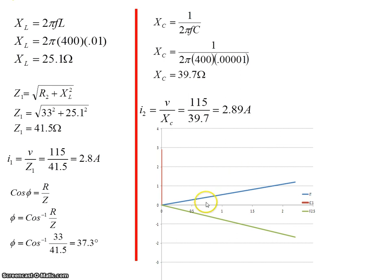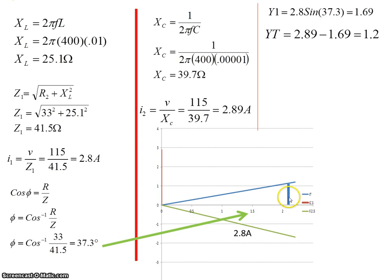So if I draw the phasor, there's my 2.89 amps due to the capacitor. Here's my 2.8 amps due to the inductor. If I want to get that component, I know that's 1.69. So it's 2.8 times sine of 37.3, which is 1.69. This component is my 2.89 here, minus this component, which is 1.69. So 2.89 minus 1.69 gives me 1.2.